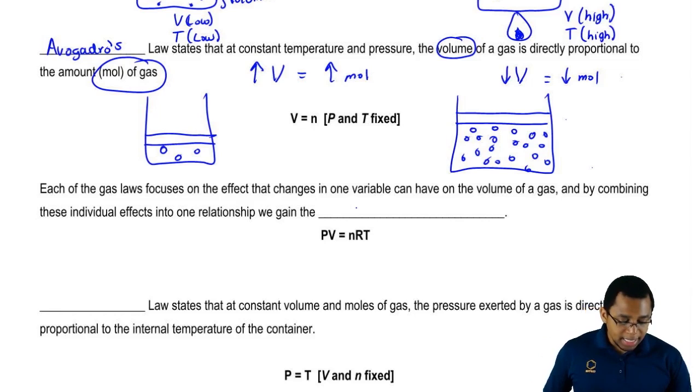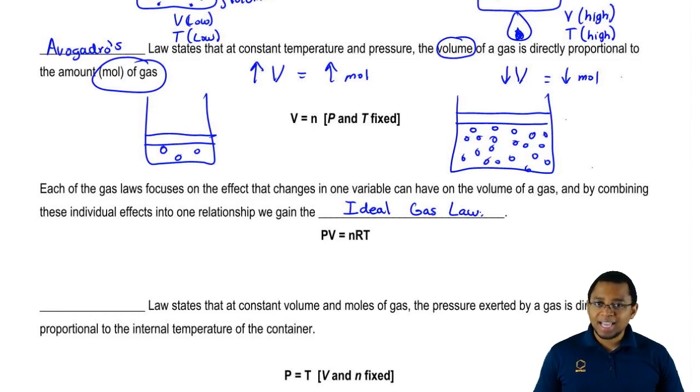We're going to say all together they combine to give us the ideal gas law. This equation is going to be essential for our calculations dealing with gases. The ideal gas law is PV equals nRT.